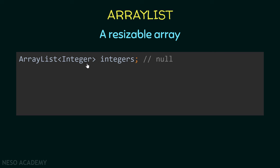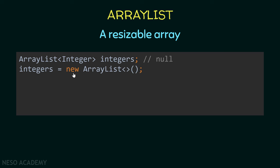In this case we want to create an ArrayList of integers. Notice I'm using the class called Integer — not the primitive type — so keep this in mind. After that we specify the name of this ArrayList, in this case it is called 'integers'. To instantiate it, we assign it to a new ArrayList followed by angle brackets and parentheses, which is the constructor of the ArrayList class.